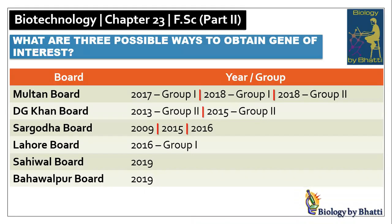Short question number one: What are three possible ways to obtain a gene of interest? Past paper references: Multan board 2017 group 1, 2018 group 1, 2018 group 2; DJ Khan board 2013 group 2 and 2015 group 2; Sargoda board 2009, 2015, 2016; Lahore board 2016 group 1; Saiwal board 2019; Bahawalpur board 2019.